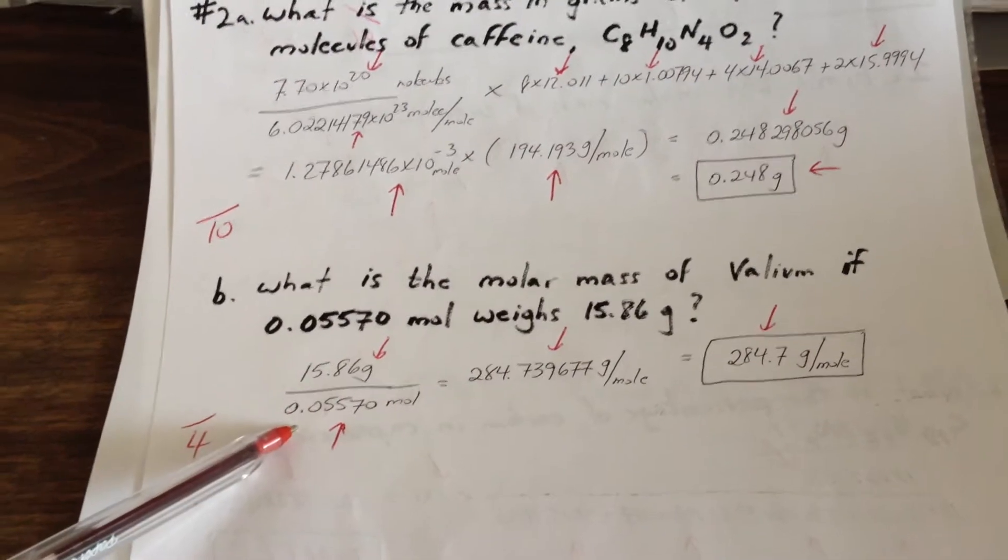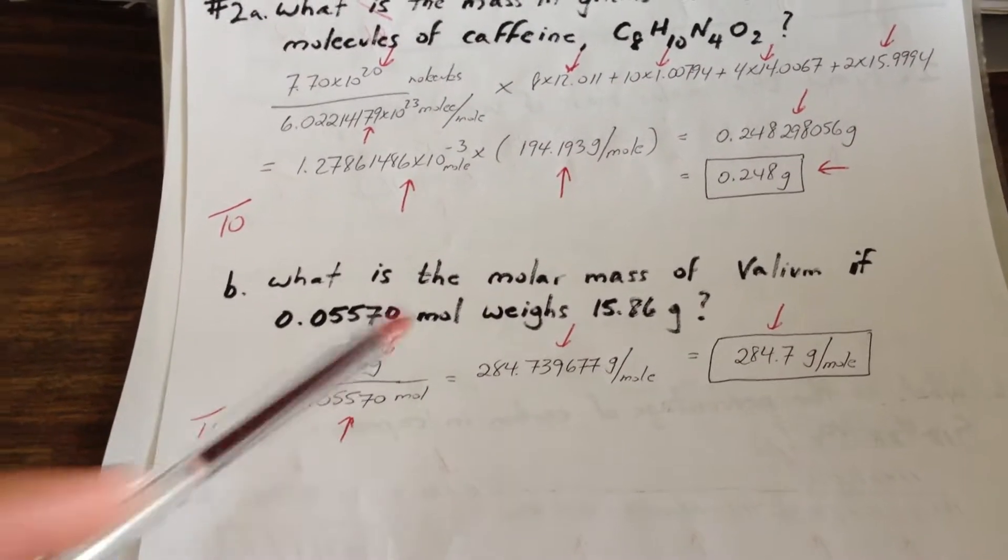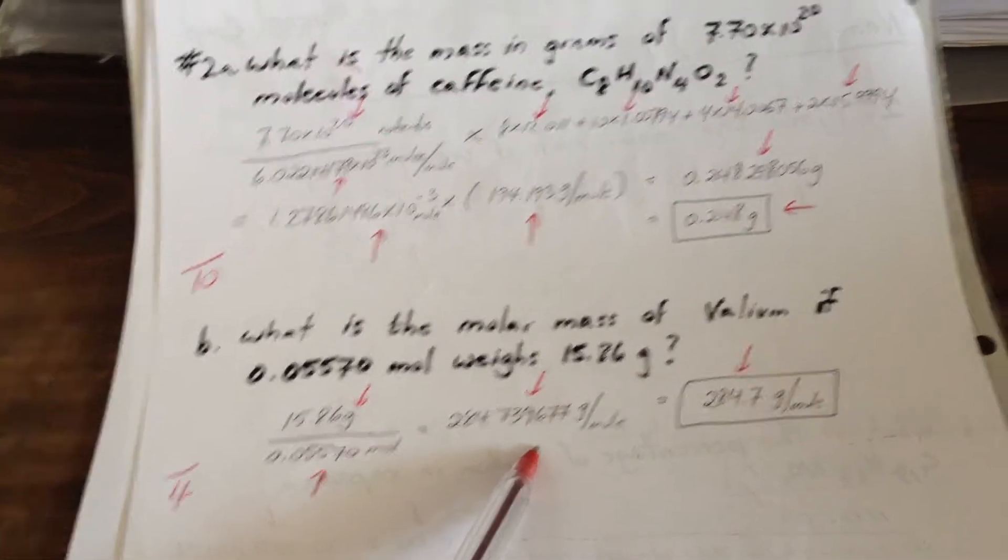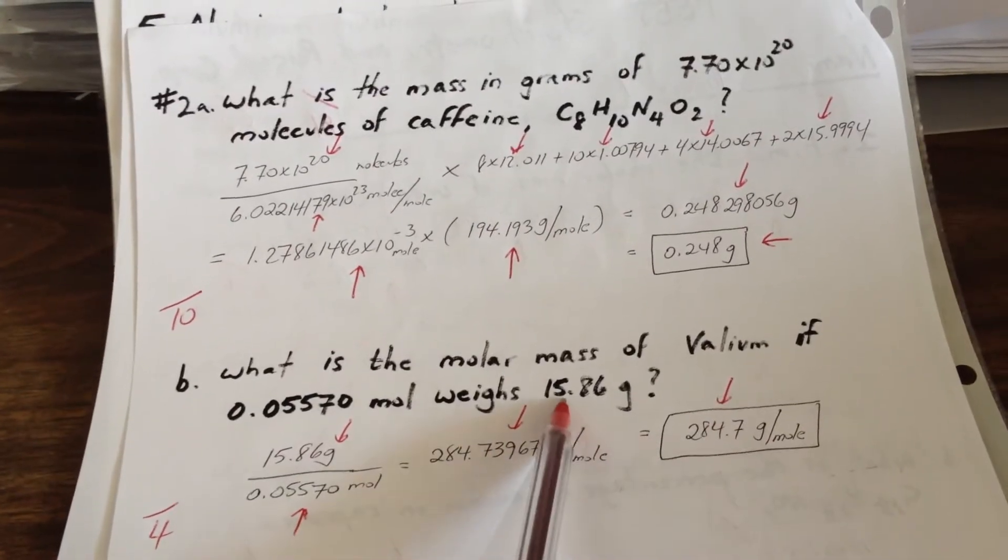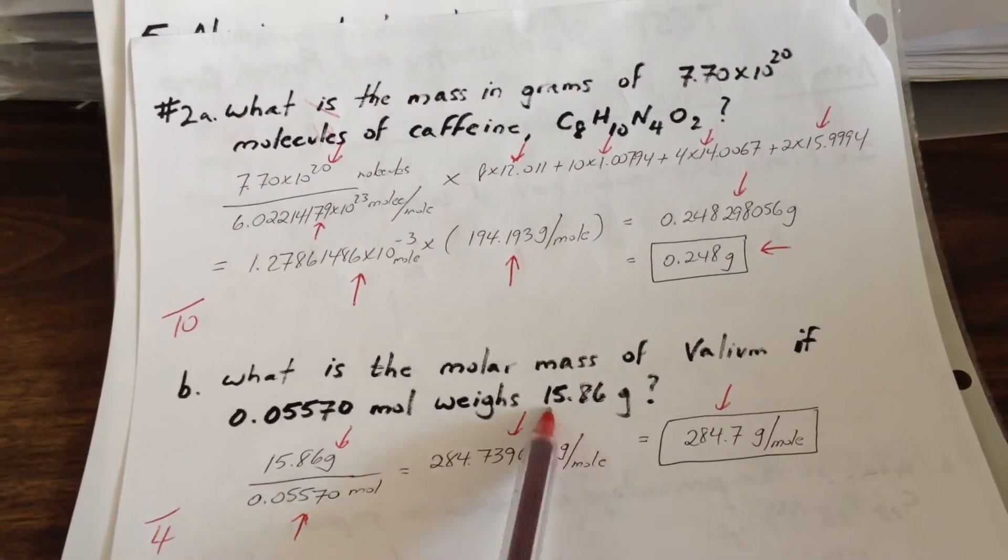15.86 grams represents 0.055 moles, so the molar mass is 284 grams per mole. We're only allowed four significant figures because the question only does report the numbers to four significant figures. That question is worth four marks.